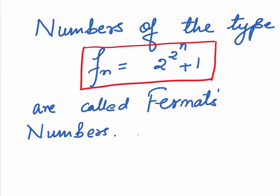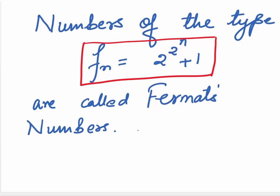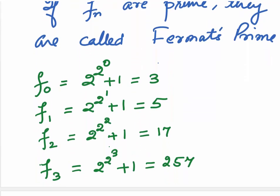Numbers of the type which we denote by Fn, 2 to the power 2 to the power n plus 1, are named after him and they are called the Fermat's Numbers. If these numbers are prime, they are known as Fermat's Primes.